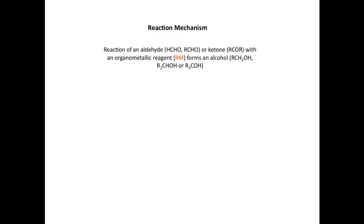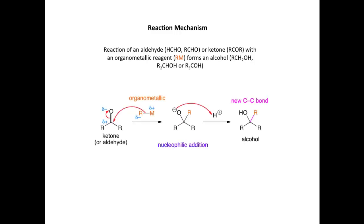Let's have a look at the key reaction mechanism. Here we have an organometallic reagent reacting with a ketone. The nucleophilic site in the organometallic reagent is this carbon-metal bond. The electrons move towards the electrophilic carbon atom in the carbonyl, and we then push electron density onto the electronegative oxygen. This forms an alkoxide ion intermediate which, in a second step on protonation on workup, forms the alcohol. This is a classic nucleophilic addition reaction mechanism.